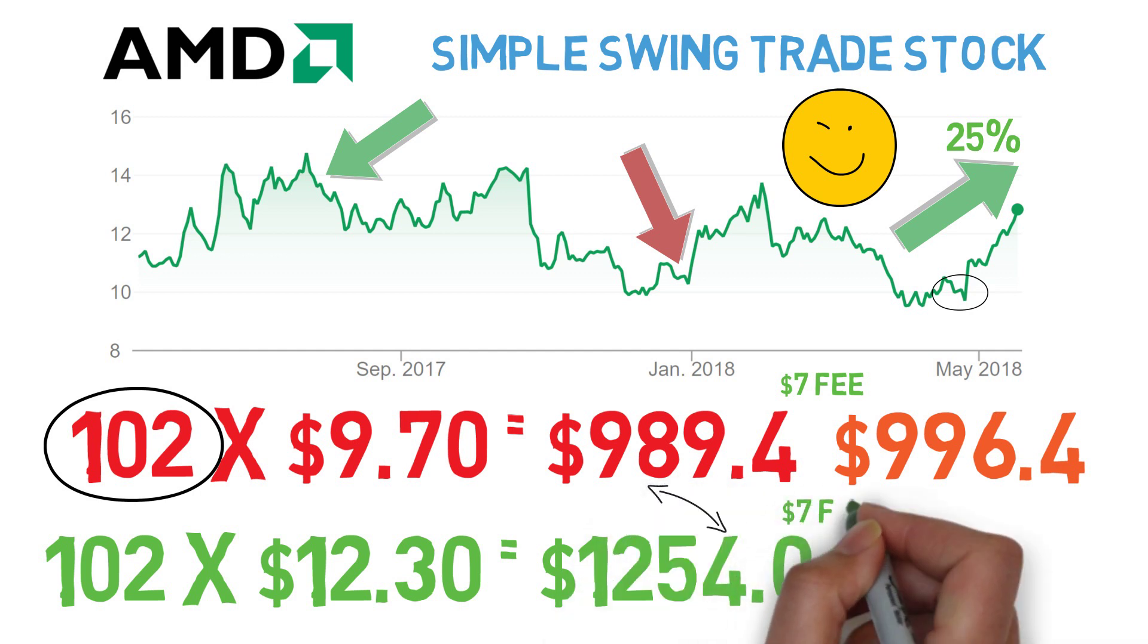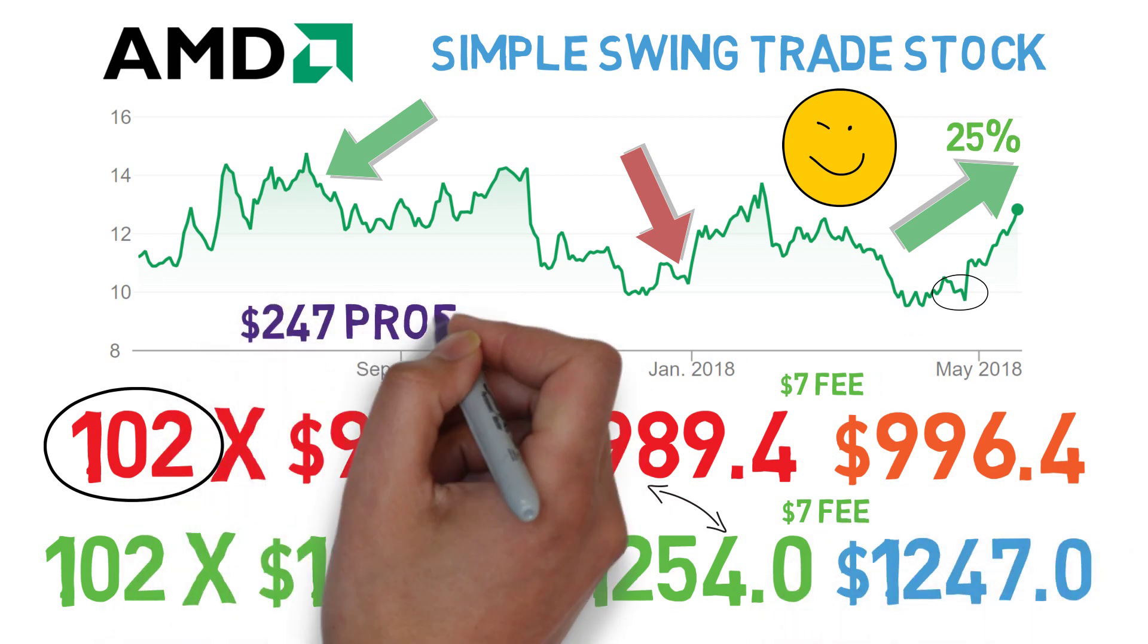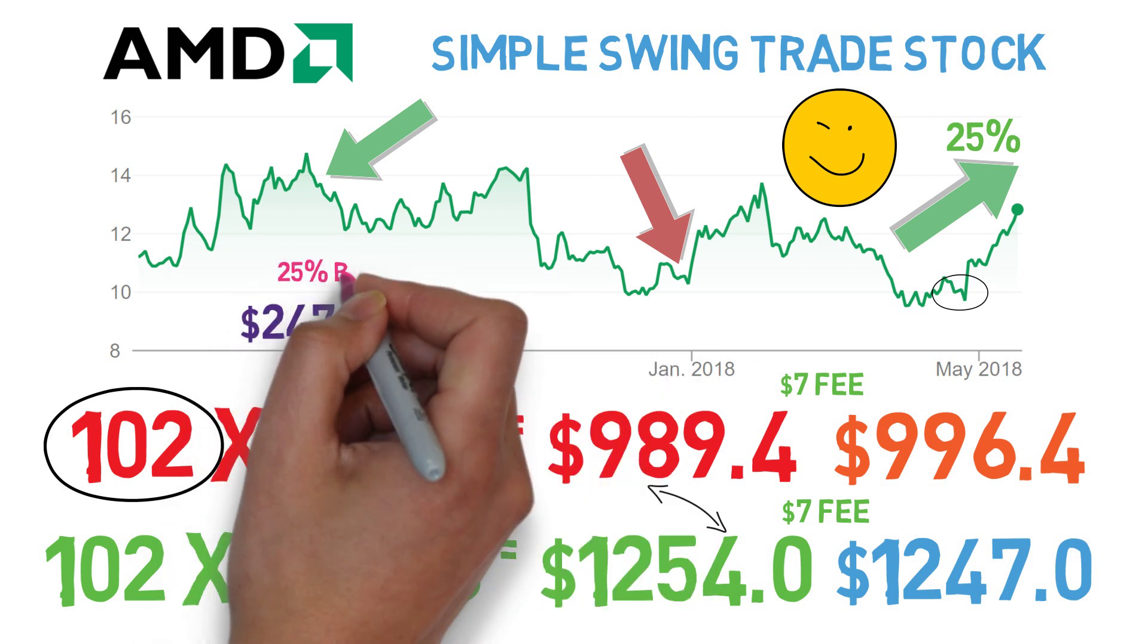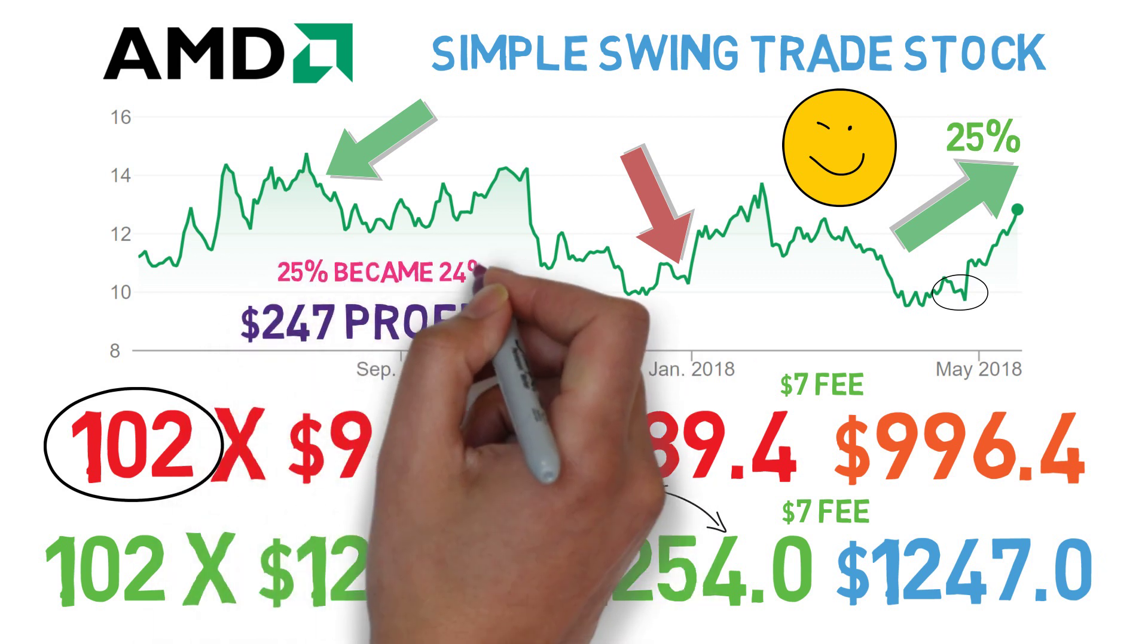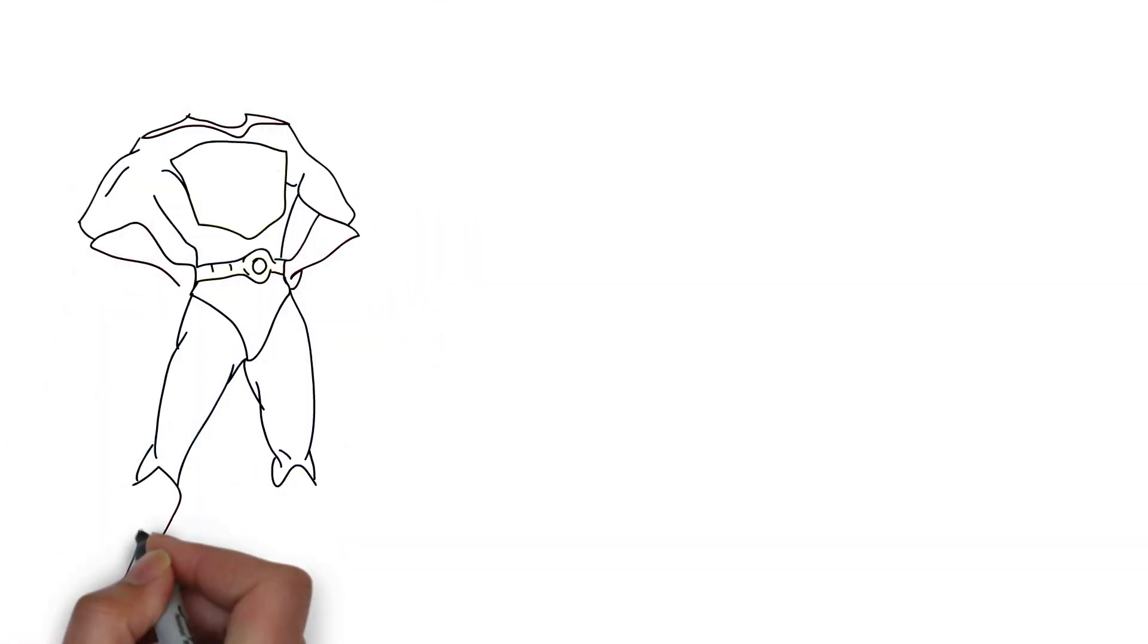Selling it would cost you another $7. $1,254 minus $7 equals $1,247, or a profit of $247. That 1.4% fee wasn't bad. Your 25% profit is 24% after fees.